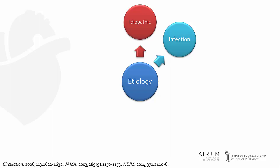However, bacterial, fungal, and parasitic pericarditis rarely may occur. Autoimmune causes of pericarditis are more common in patients with a history of autoimmune disease, such as lupus and arthritis. These patients may be more likely to have recurrent cases.